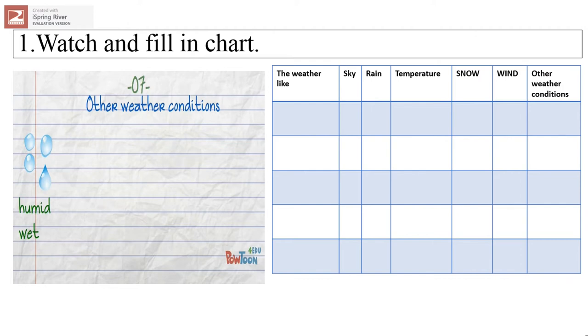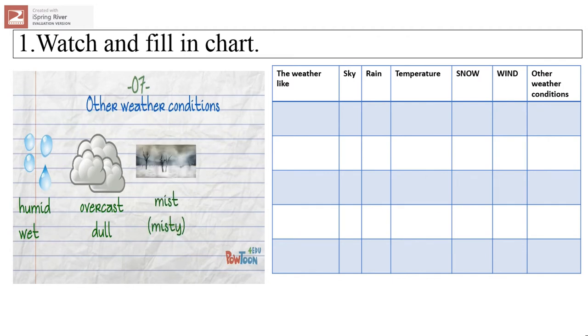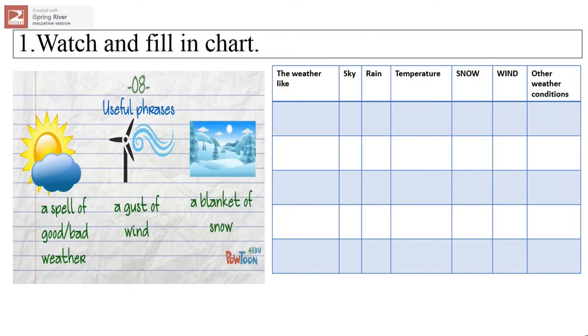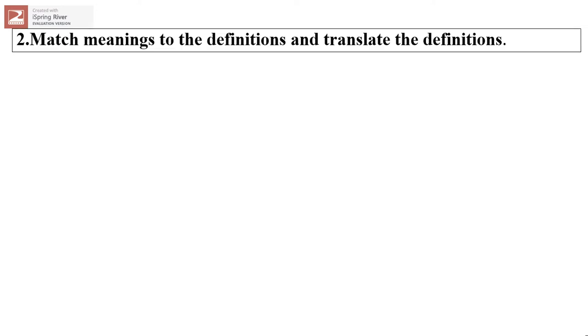Some other weather conditions. When there is a lot of water vapor in the air, it's humid or wet. And when there are a lot of clouds in the sky, it's overcast or dull. When everything looks like in a cloud, it's a mist and it's misty. And a really thick one is called a fog and it's foggy. More useful phrases for you: you can say a spell of good or bad weather, a spell means a period of time. A gust of wind means a sudden rush of wind. And a blanket of snow means a thick layer of snow on the ground.